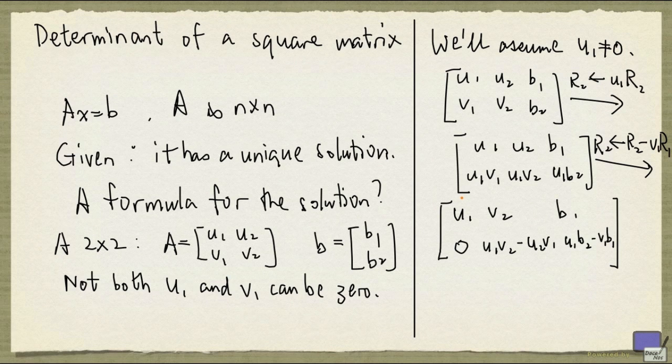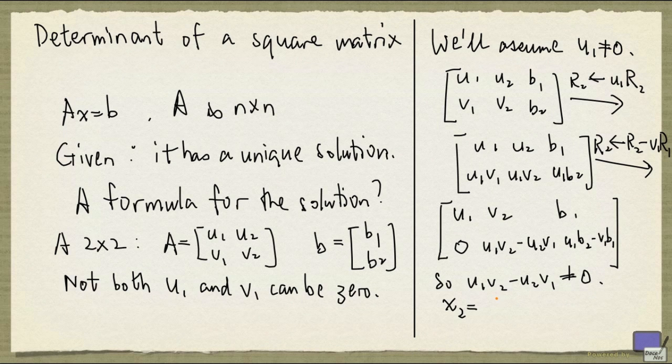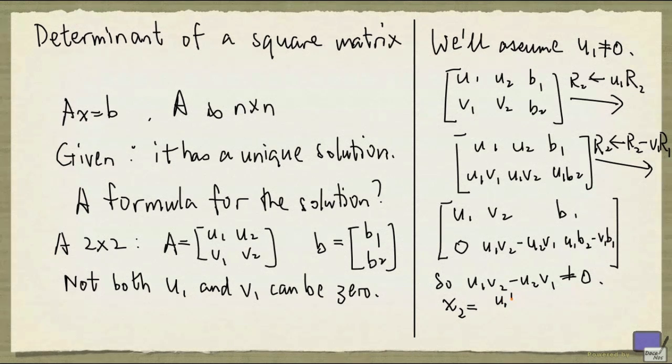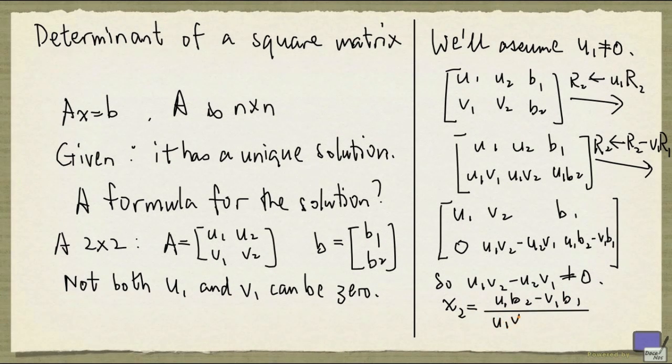Because we are told that the system has a unique solution, this quantity here, u1 v2 minus u2 v1, must be non-zero. And what that means is, we can get x2 right away. And x2 will be u1 b2 minus v1 b1 divided by u1 v2 minus u2 v1.